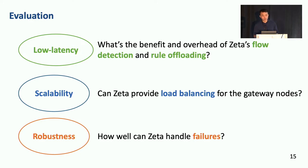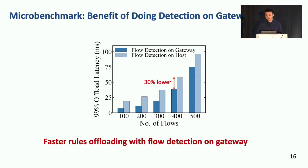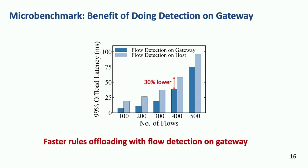With this evaluation, I'd like to discuss three questions: first, what is the benefit and overhead of Zeta's flow detection and rule offloading? Second, can Zeta provide load balancing for gateway nodes? And third, how well can Zeta handle failures? We first measure the difference of doing elephant flow detection on gateway versus on hosts, varying the number of offloaded flows and measuring 99th-percentile offloading latency. Zeta's design of doing flow detection on gateway nodes achieves lower offloading latency, mainly because it avoids high control loop latency.